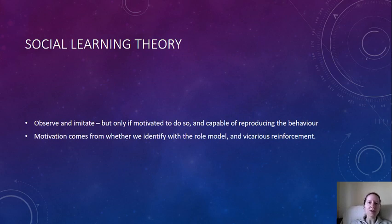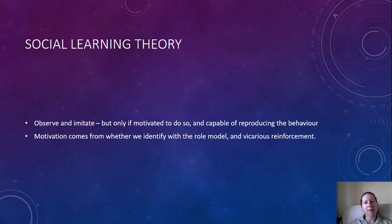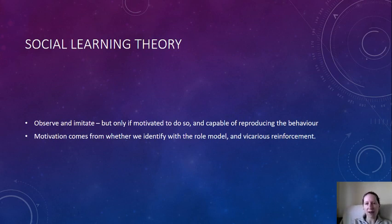We are reinforced indirectly or vicariously depending on the consequences for our model. For example, if we see someone pushing into the dinner queue and they are punished for it, we're less motivated to reproduce their behavior because we're vicariously punished as well — we observe the consequences and don't imitate because we can see the outcome would be negative.